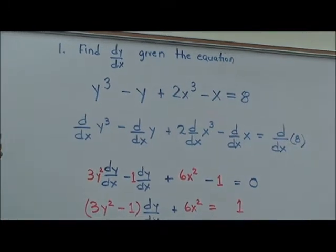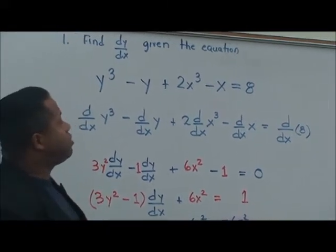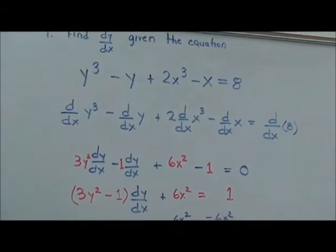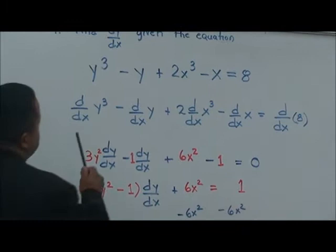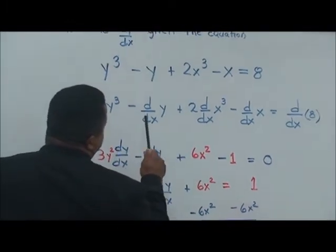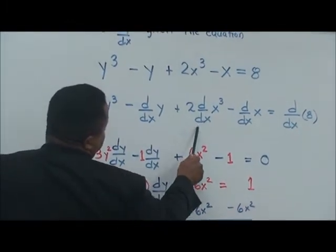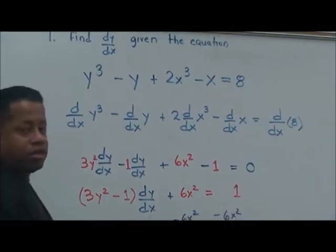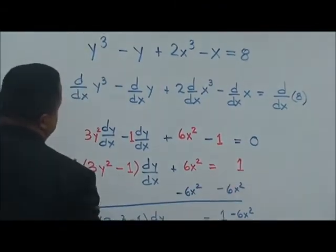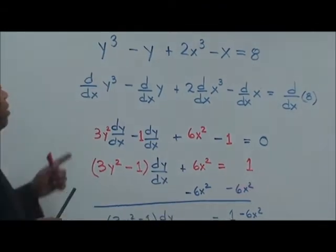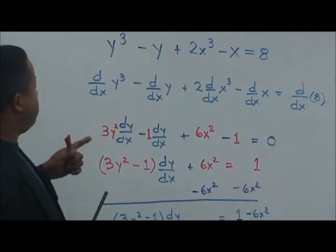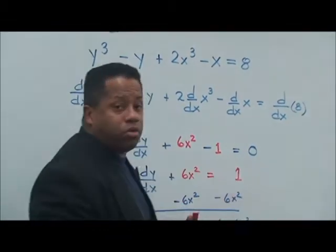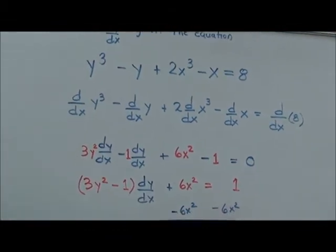So that's y cubed minus y plus 2x cubed minus x is equal to 8. What we've done is we're going to take the derivative of each term. When we're doing this, we want to put in our derivative with respect to x next to each term, because we want to honor the fact that that's what we're actually doing.